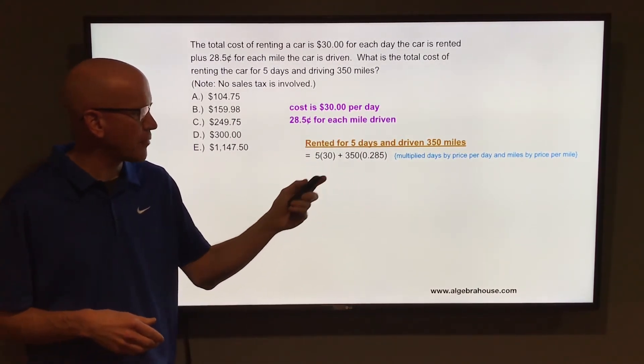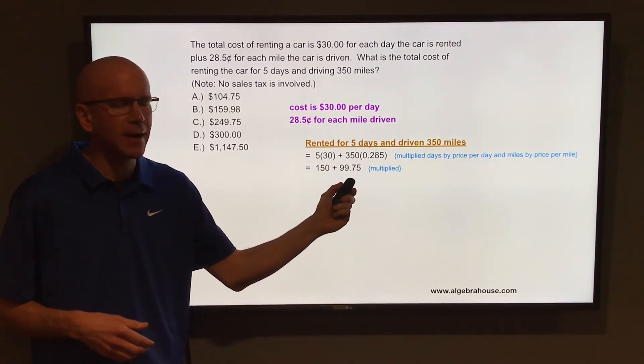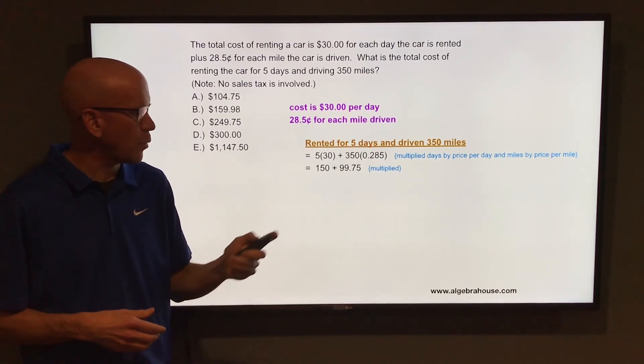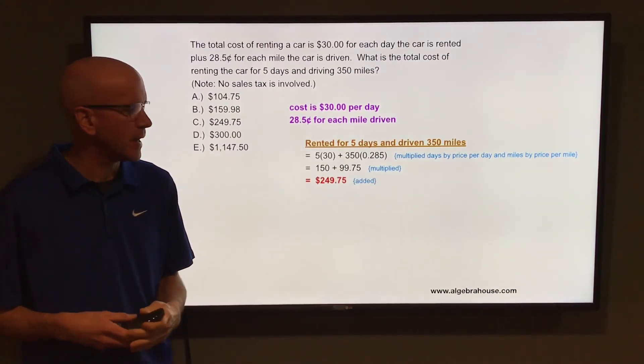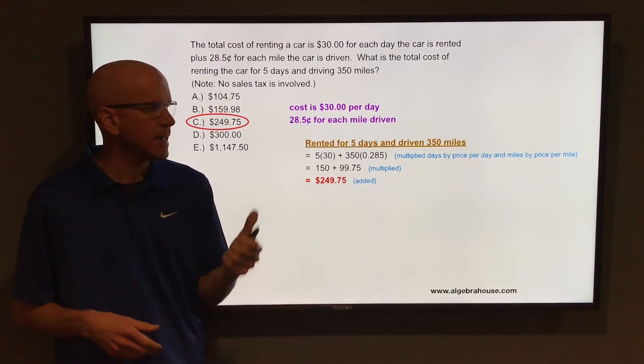If you multiply five by 30, that is 150. And if you multiply 350 by 0.285, that is 99.75. So if you add 150 and 99.75, that is $249.75, and that is letter C.